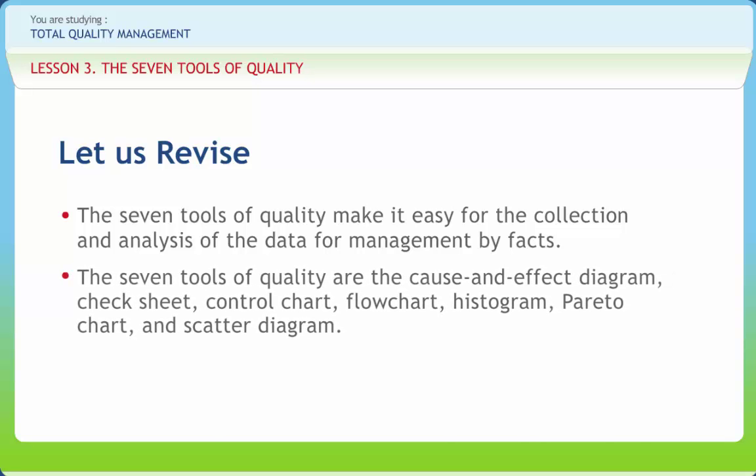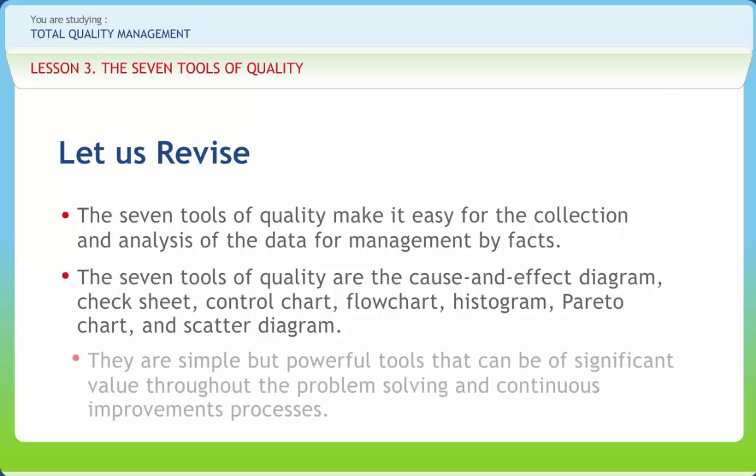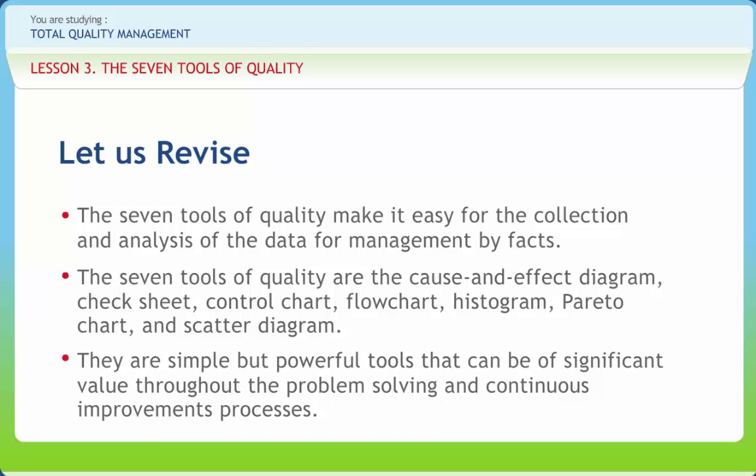A picture can convey ideas better than many words. The seven tools of quality are the cause and effect diagram, check sheet, control chart, flow chart, histogram, Pareto chart, and scatter diagram. They are simple but powerful tools that can be of significant value throughout the problem solving and continuous improvement processes.